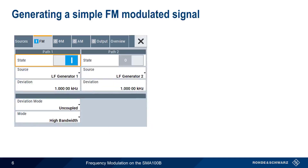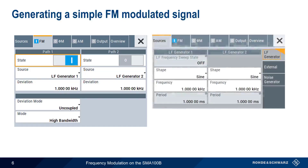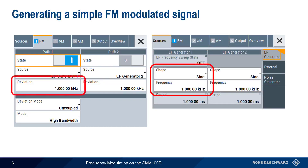Let's show how to generate a simple FM modulated signal by enabling FM modulation and then selecting LF generator 1 as our modulation source. In the Sources tab, we can leave the default LF generator setting of a 1 kHz sine wave. If needed, FM deviation can be configured as well. All that's left now is to turn on RF, and the SMA will be producing a basic FM modulated signal.